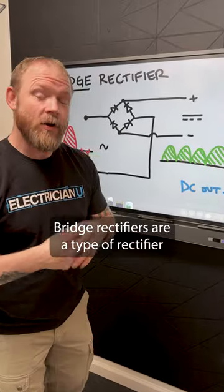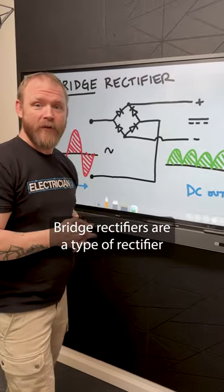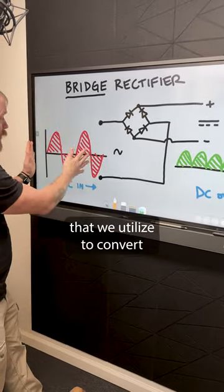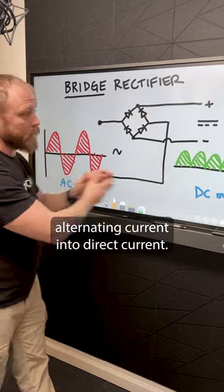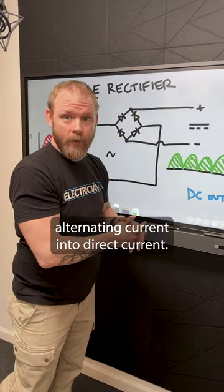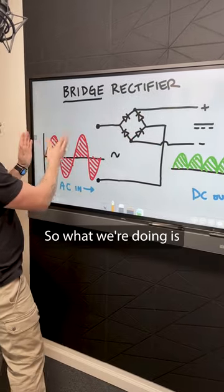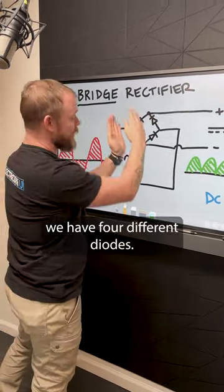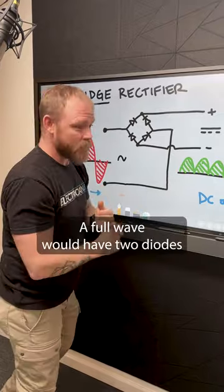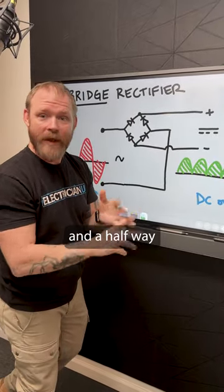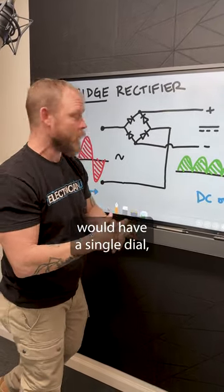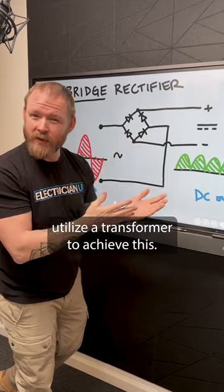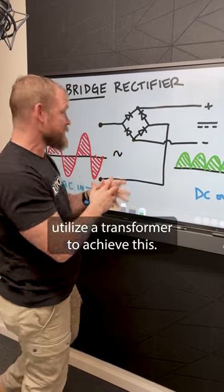Bridge rectifiers are a type of rectifier that we utilize to convert alternating current into direct current. We have four different diodes — a full wave would have two diodes and a half wave would have a single diode, but both of those utilize a transformer to achieve this.